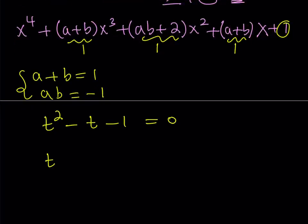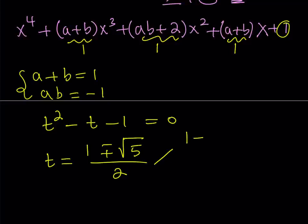From here, we get the solutions using the quadratic formula: negative b plus or minus the square root of b squared minus 4ac, which gives us square root of five, divided by two. So those are the roots. We get two solutions: one plus root five over two and one minus root five over two. Those are the t values, which are also the a and b values — it doesn't matter which is which because they're interchangeable.